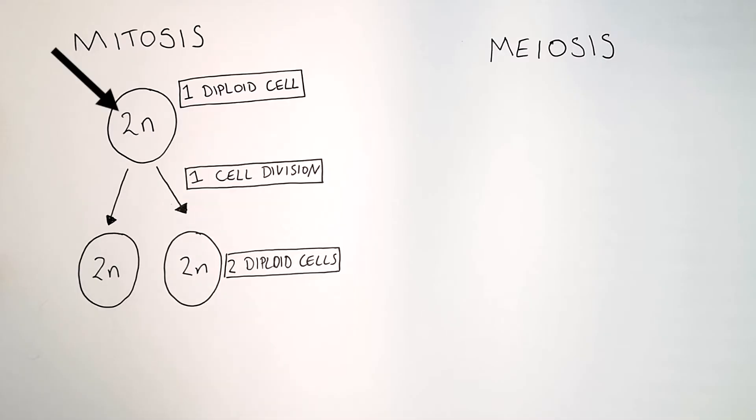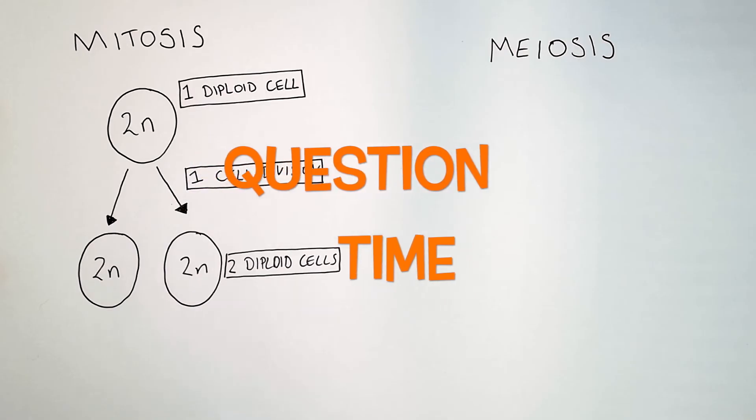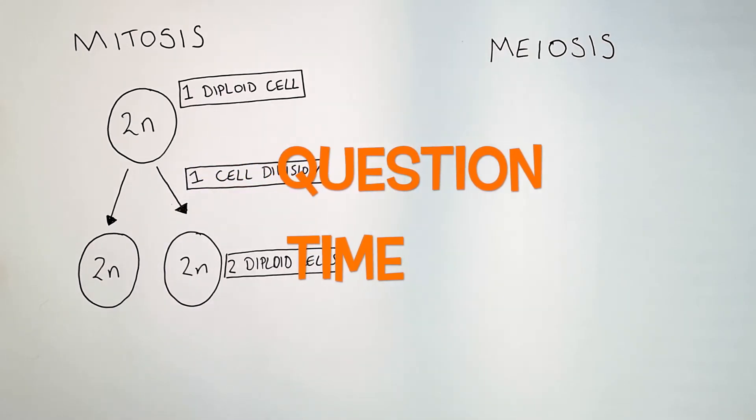So mitosis is when one diploid cell divides once to form two diploid body cells that are genetically identical. It's question time. Attempt these questions to check your understanding.